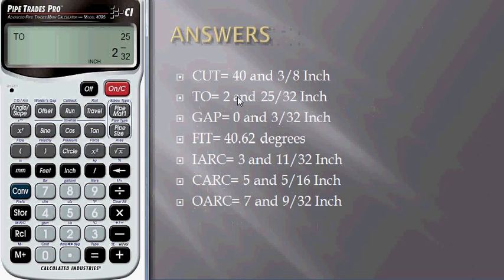Press travel to get TO as 2 and 25/32 inch. Press travel for 3/32 inch which is stored as welder's gap. Press one more travel. This is our fitting angle, 40.62 degrees.